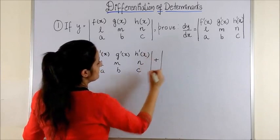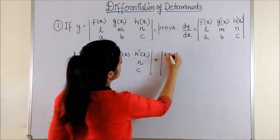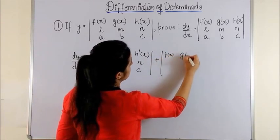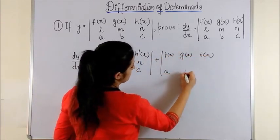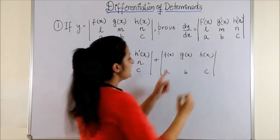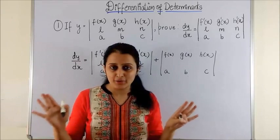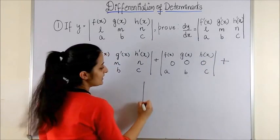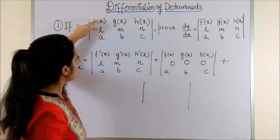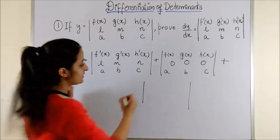Next time, keeping the first and third as they were and differentiating the second one. Now l, m, n and a, b, c, they're all constants, so this becomes zero. Plus, likewise, this time retaining the first two rows and differentiating only the third one.